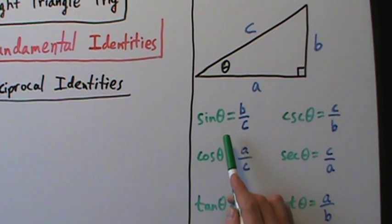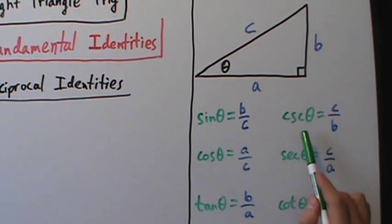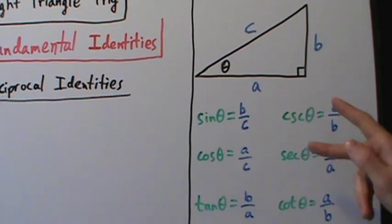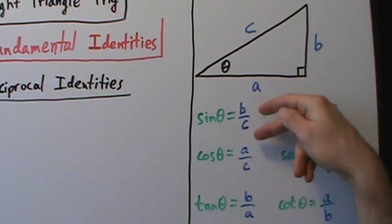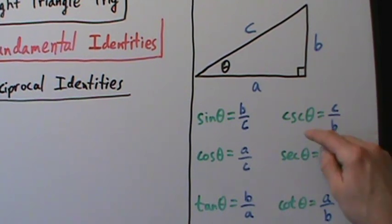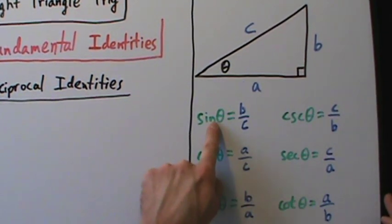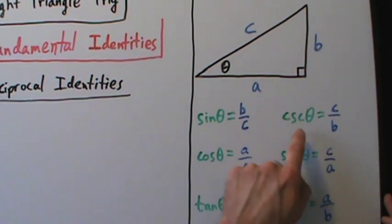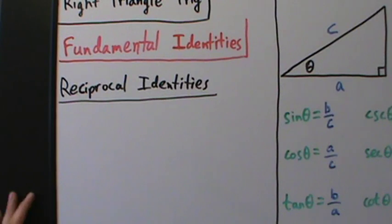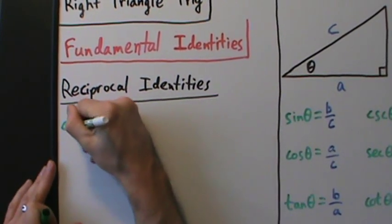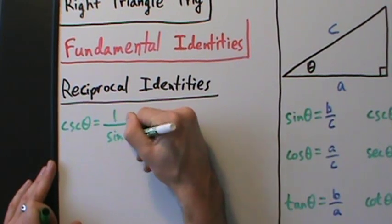Sine of theta is the opposite over the hypotenuse, which is B over C. The cosecant of theta is the reciprocal of that — C over B. So cosecant is 1 over sine. If we take 1 over B over C, we're dividing by B over C, which means multiplying by C over B, giving us C over B. That's the cosecant of theta. So the cosecant of theta equals 1 divided by the sine of theta.